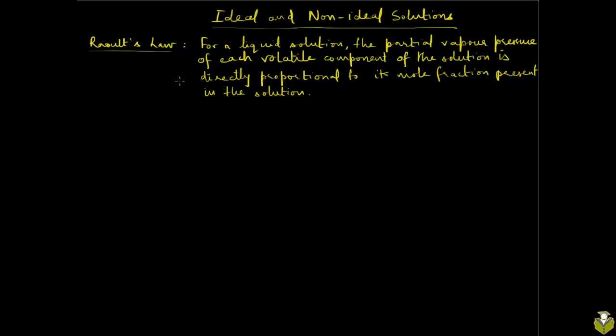Most real solutions in our day-to-day lives are not going to precisely follow Raoult's law, so there will be deviations. But if you take a hypothetical scenario where solutions follow Raoult's law precisely across the entire range of concentrations, then those solutions are called ideal solutions.